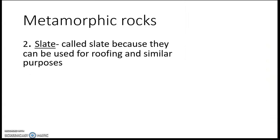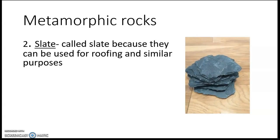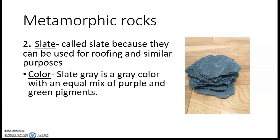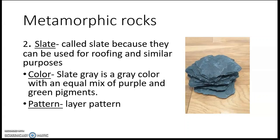Number two: slate. Slate is called slate because it can be used for roofing and similar purposes. Look at the picture — the color of slate is gray, with an equal mix of purple and green pigments. The pattern is a layer pattern, and the weight is heavy.